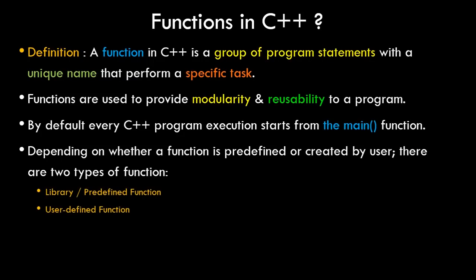So what are functions? A function in C++ is a group of program statements with a unique name that performs a specific task. It is a group of program statements that has been given a unique name, and some of them are predefined. The function is defined in such a way that it performs a specific task. Functions are used to provide modularity and reusability to a program — those are the major advantages of a function.